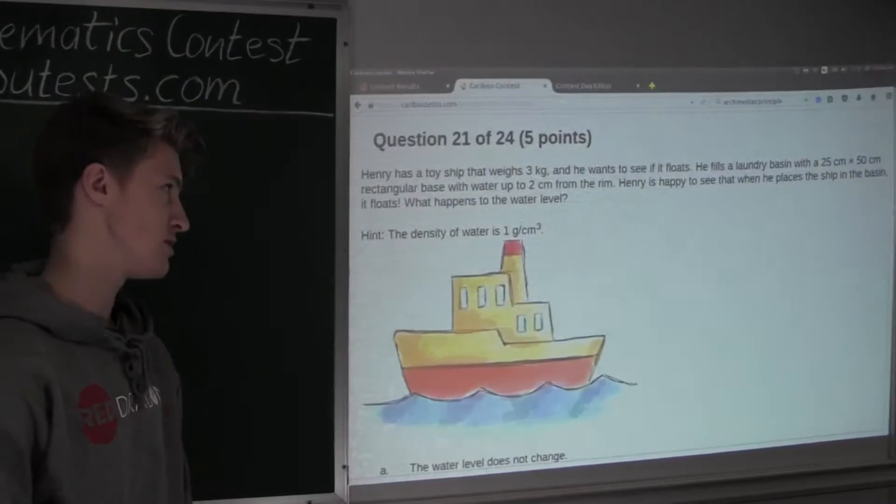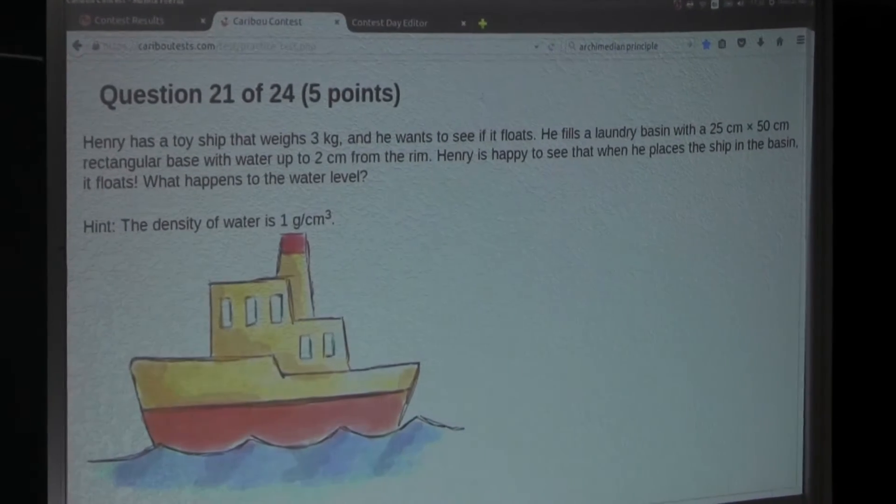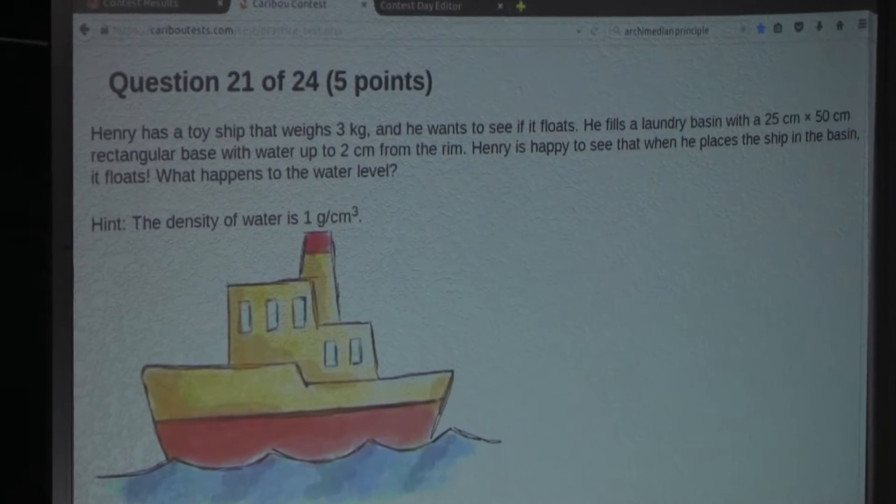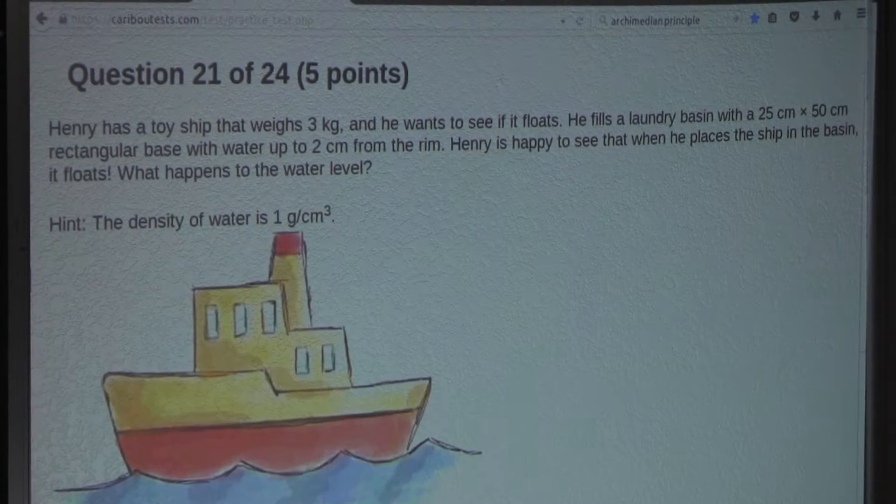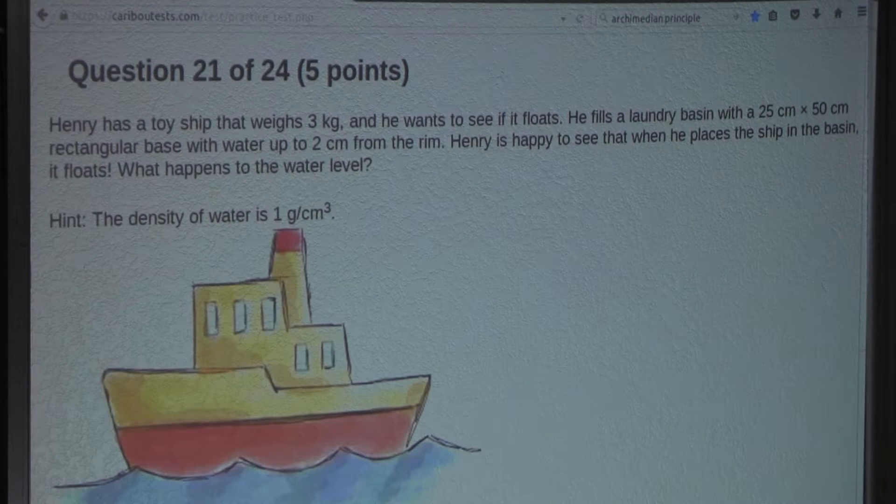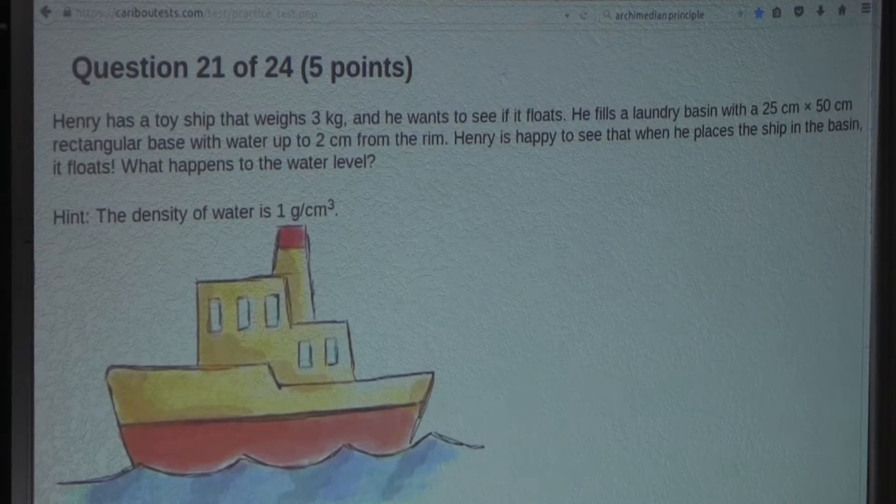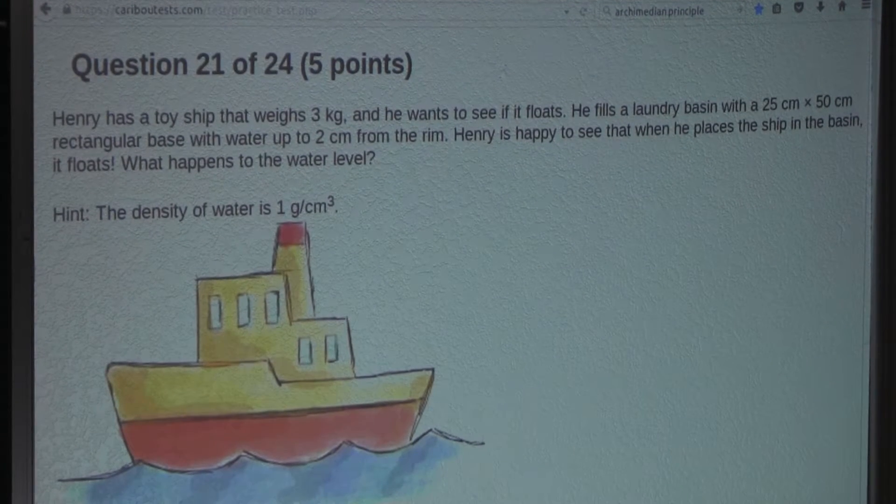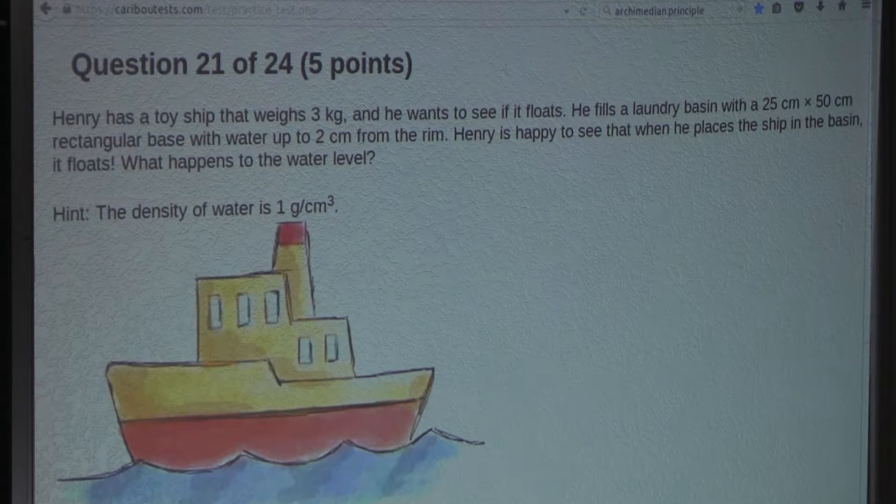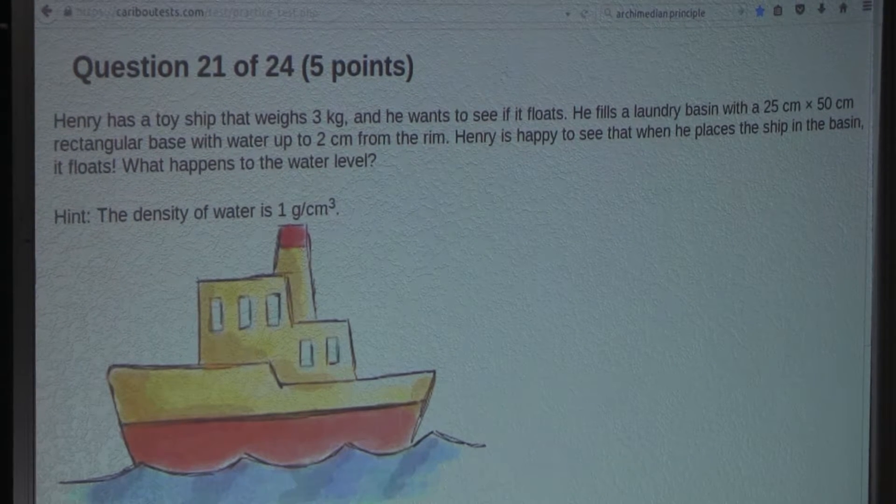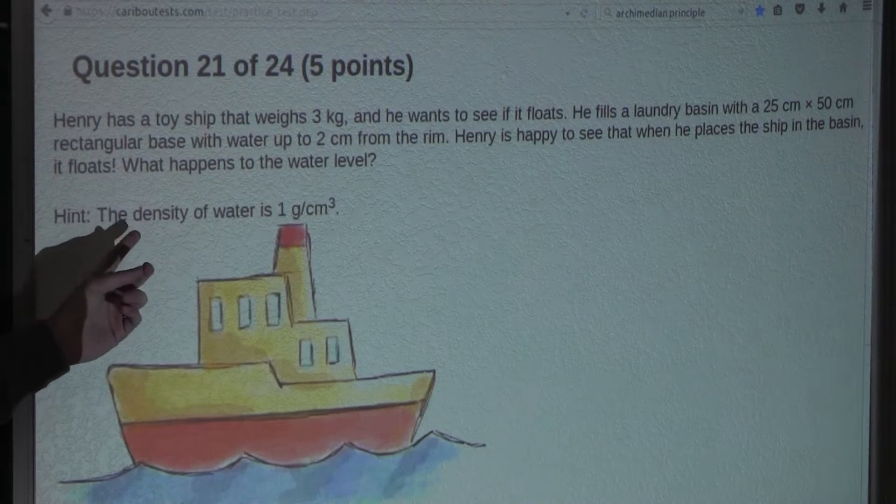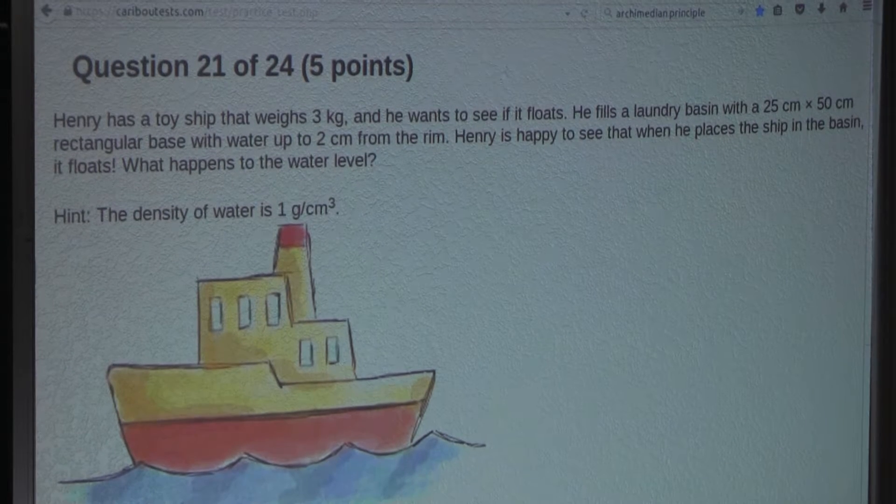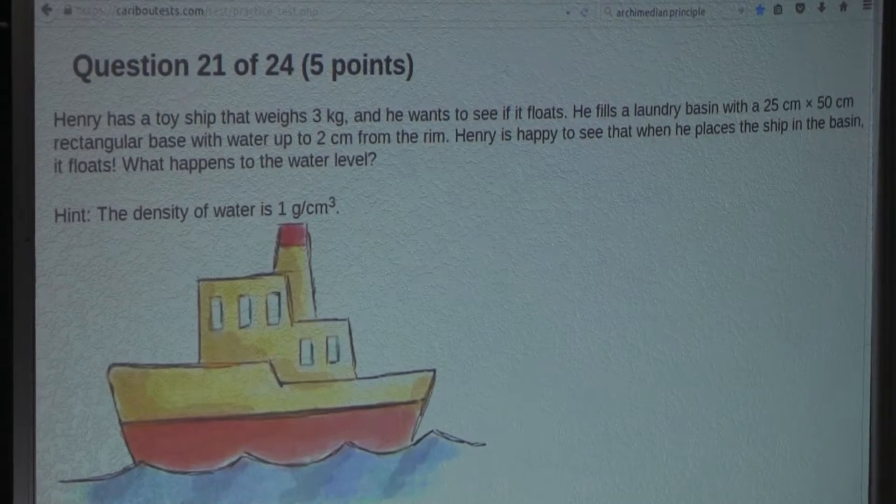So the question is, Henry has a toy ship that weighs 3 kg, and he wants to see if it floats. He fills a laundry basin with a 25 cm × 50 cm rectangular base with water up to 2 cm from the rim. Henry is happy to see that when he places the ship in the basin, it floats. What happens to the water level? Hint: the density of water is 1 g/cm³.